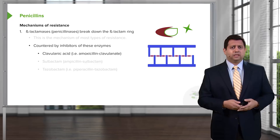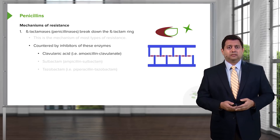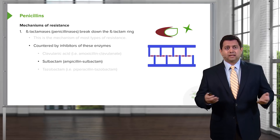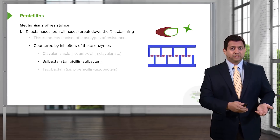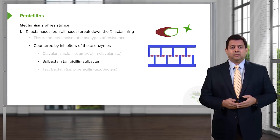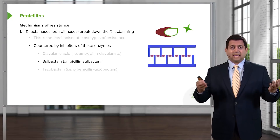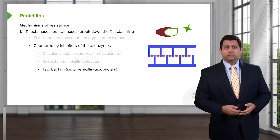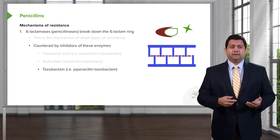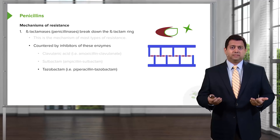We use clavulanic acid in combination with amoxicillin and sell it as amoxicillin-clavulanate. Sulbactam is another beta-lactamase inhibitor, and we sometimes combine that with ampicillin as ampicillin-sulbactam. Tazobactam is the third one; for example, we combine it with piperacillin as piptazo.